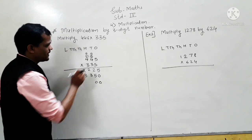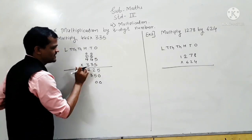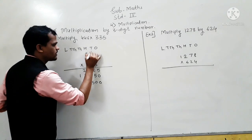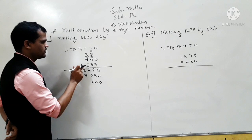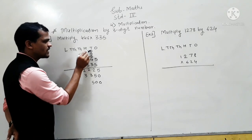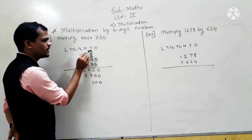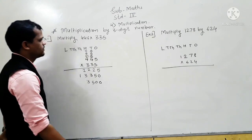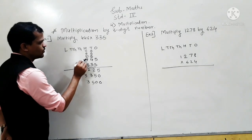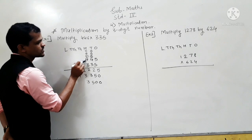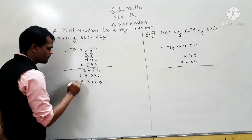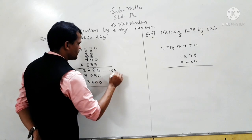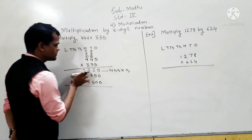Now multiply 445 by 300. So, 3 fives are 15 — write 5 here and carry 1. Then 3 fours are 12, 12 plus this carry — 3 fours are 12, 12 plus 1 is 13. Write 3 here and carry 1 to the hundreds place. Now 3 fours are 12, 12 plus this 1 carry is 13. Write these numbers. If you multiply 445 by 4, you get one product. If you multiply 445 by 30, you get another product.